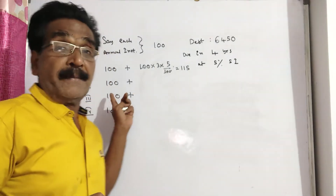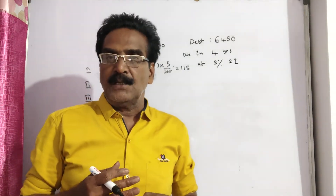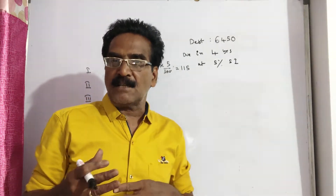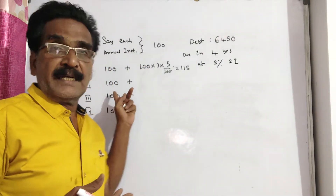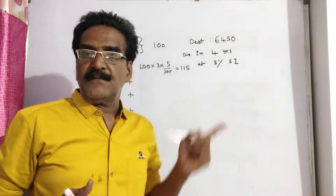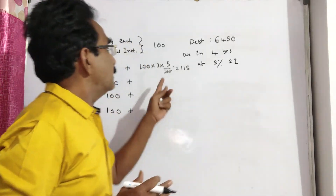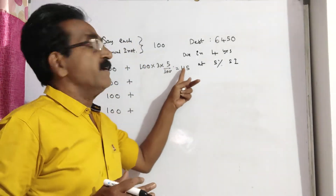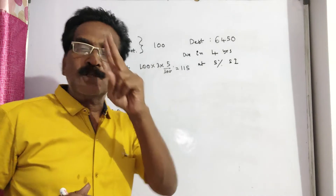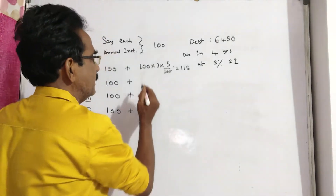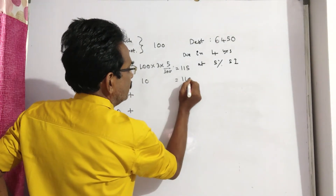The installment paid at the end of the second year — this Rs. 100 will fetch interest only for 2 years, giving Rs. 10. So 100 plus 10 equals Rs. 110.